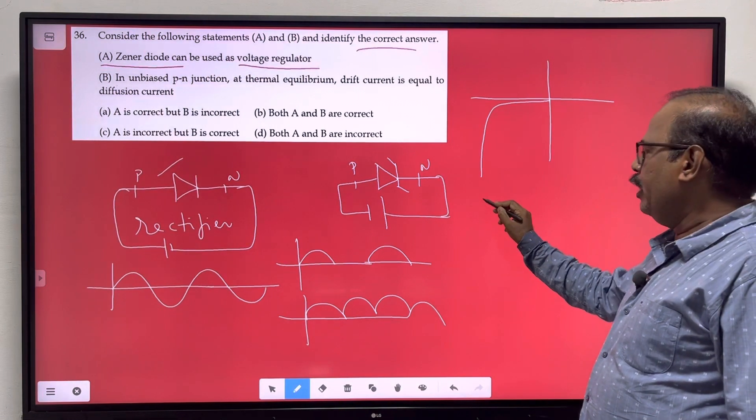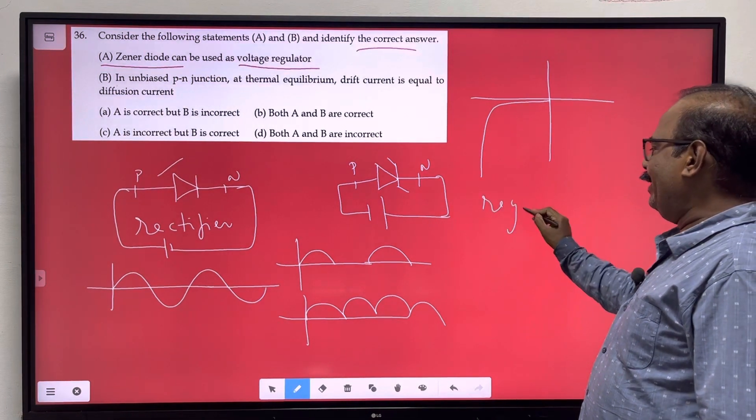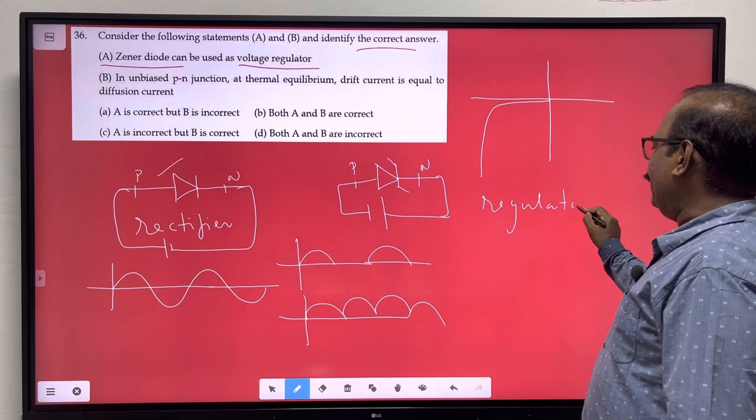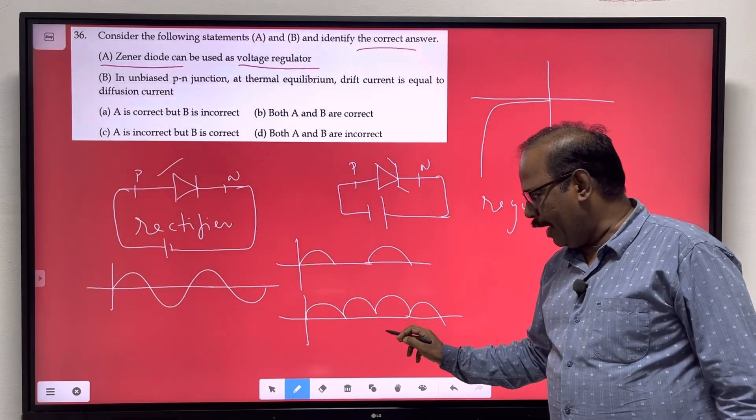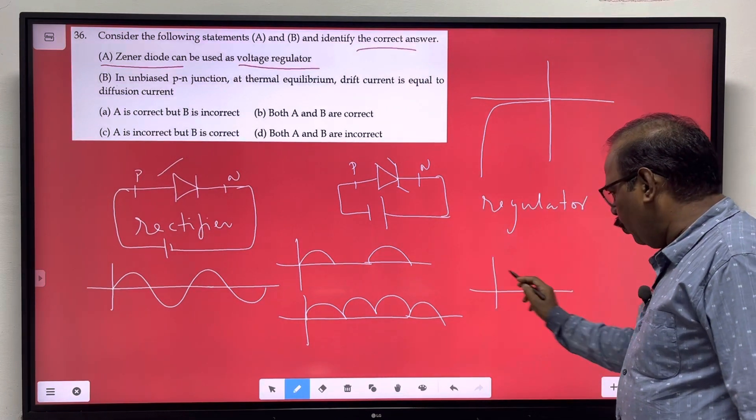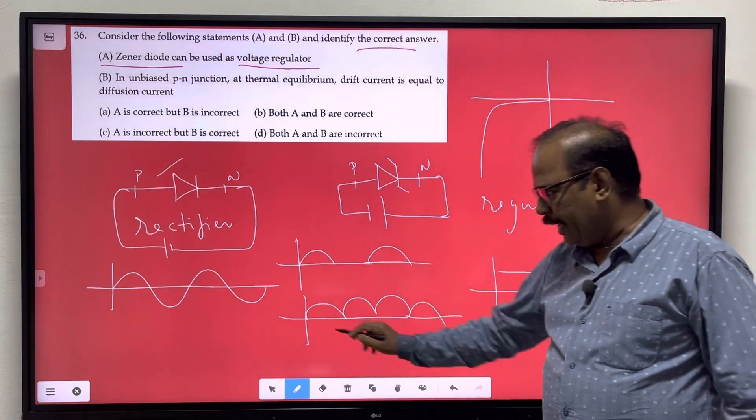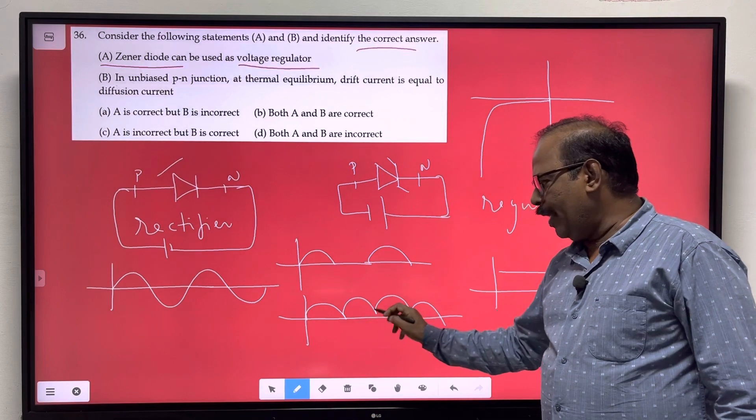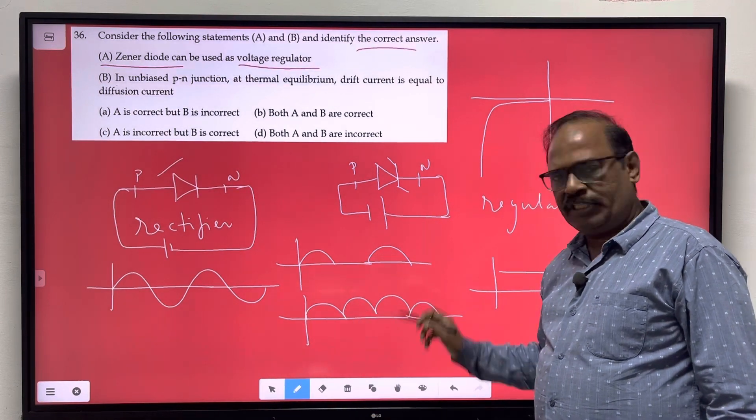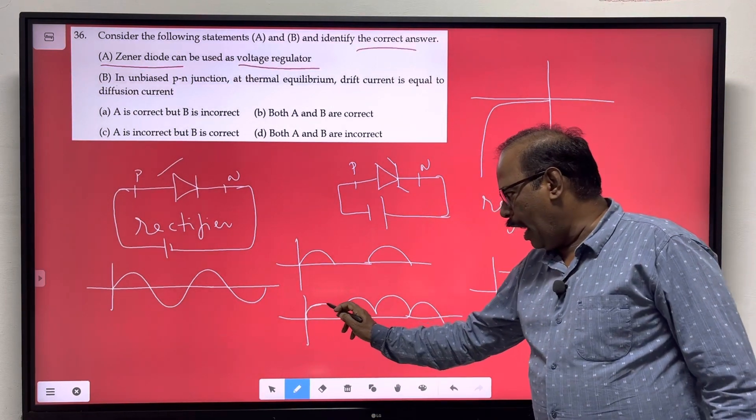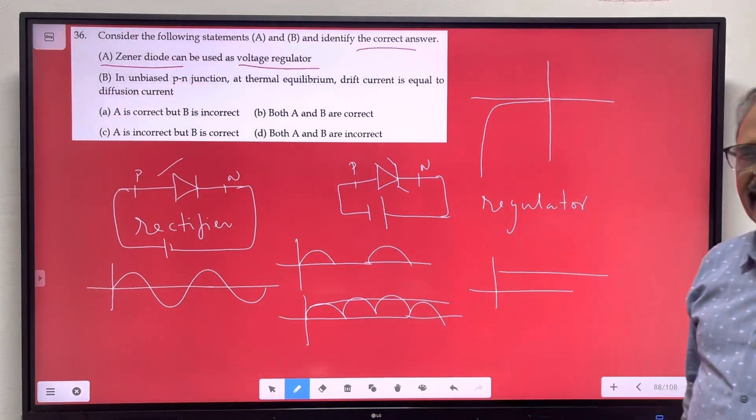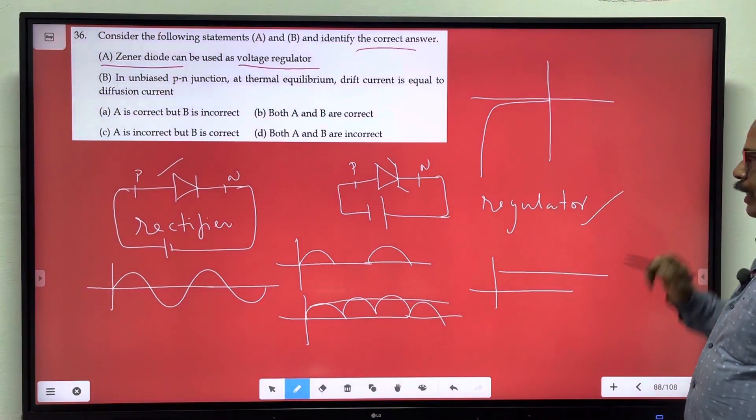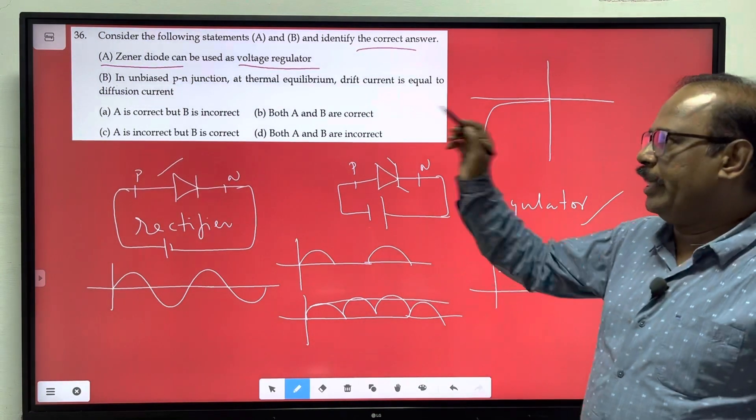The purpose is voltage regulation and it is unidirectional current, steady DC current, constant, not pulse and ups and downs, uniform constant steady regulator. This is Zener diode.